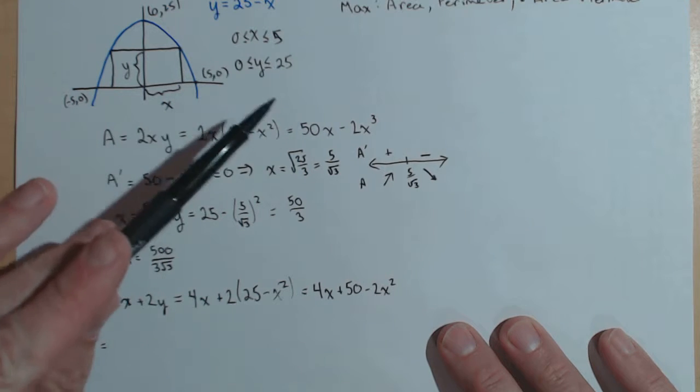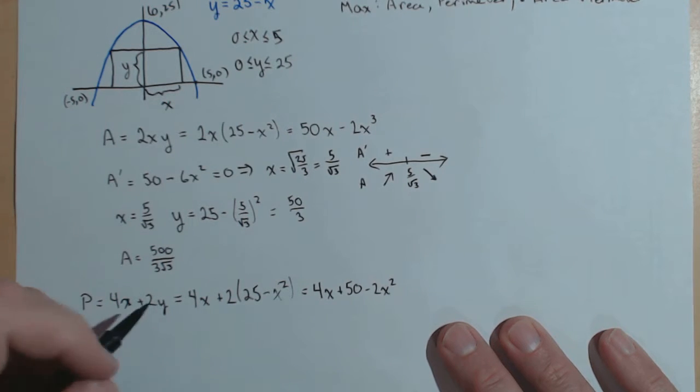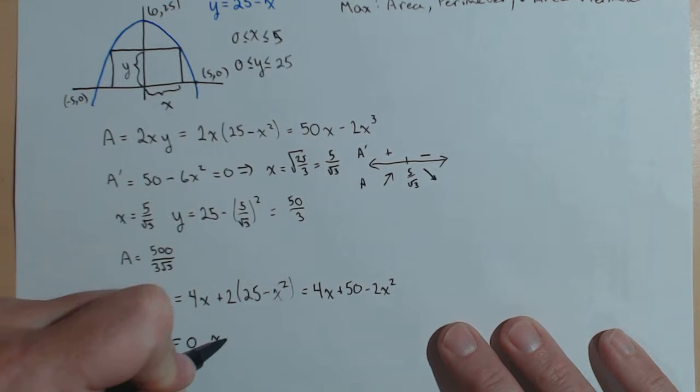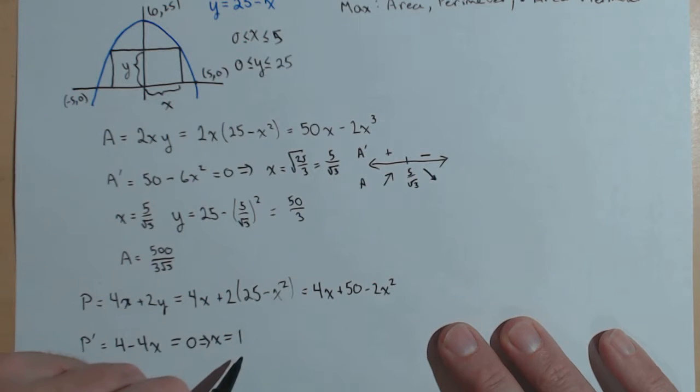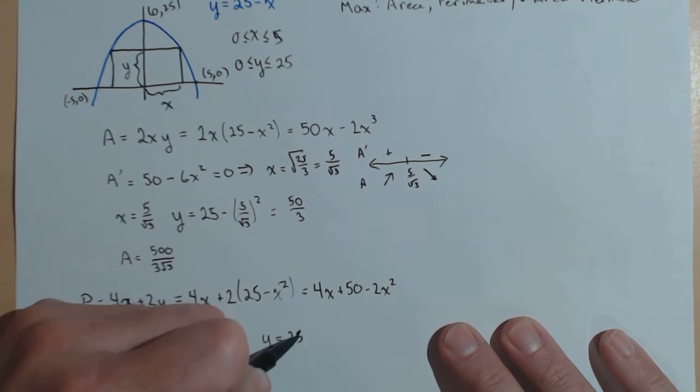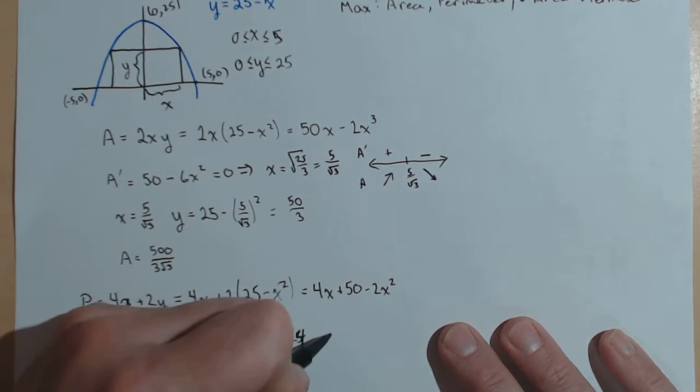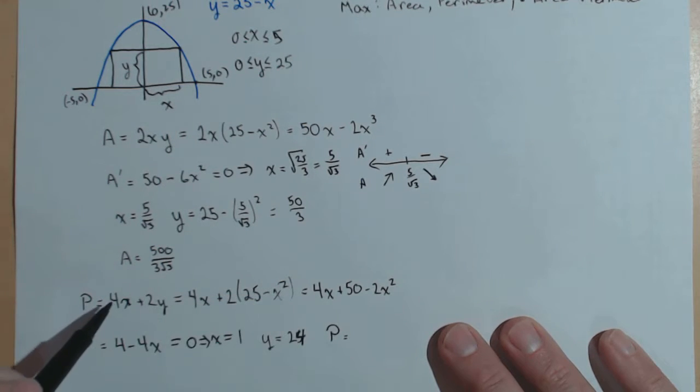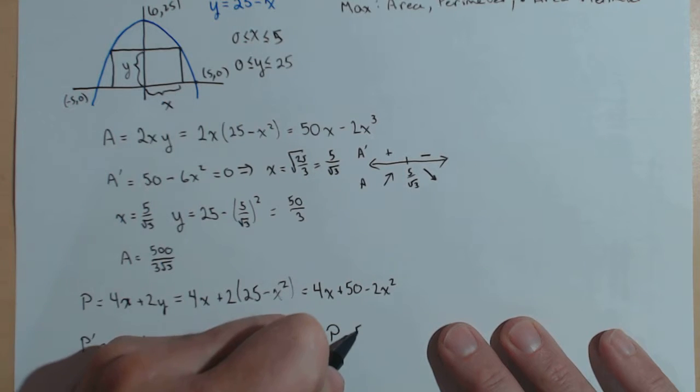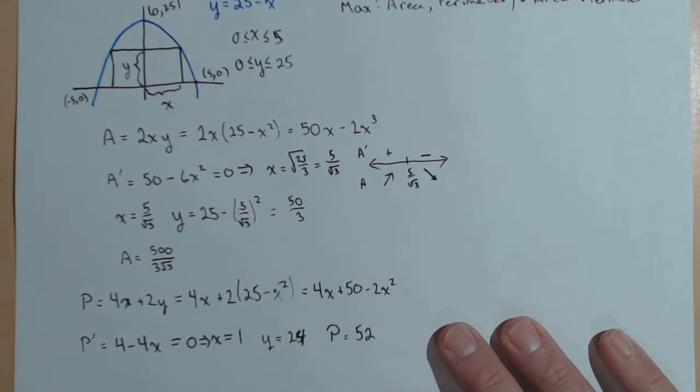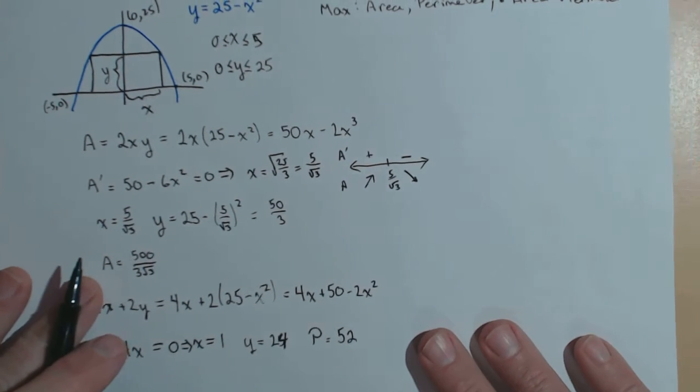We already know what the minimum will be. The minimum is going to happen when x is 0 or 5. So we take our derivative, we get 4 minus 4x. This one's an easy one. If we set that equal to 0, then that gives us x equals 1 as our critical point. If x is 1, y is 24, and that's when we'll have our maximum perimeter of 4 plus 48 or 52. So perimeter's really not too bad on this one.